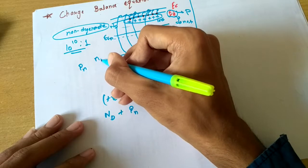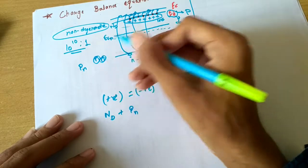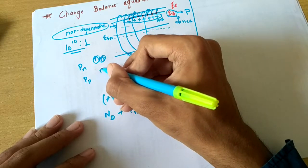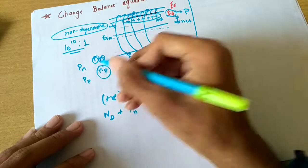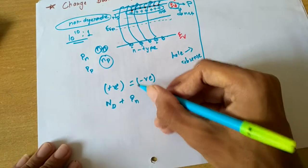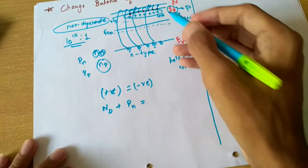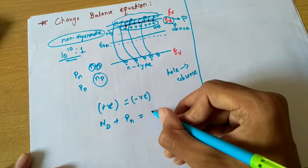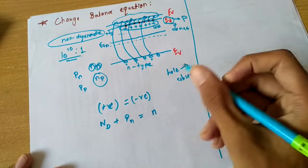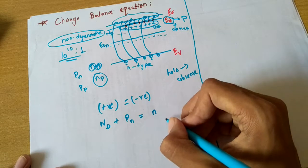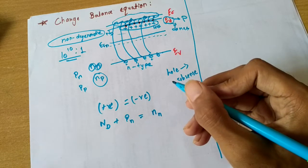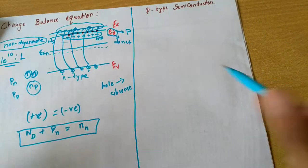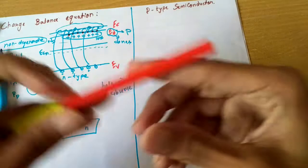This notation denotes the number of electrons in an n-type semiconductor. Similarly, this is the number of holes in a p-type semiconductor, and this is the number of electrons in a p-type semiconductor. This will be our notation throughout our course. The negative charge is the number of free electrons in the conduction band — that is, the number of free electrons in the n-type semiconductor. This gives us our charge balance equation. Now let's move towards p-type semiconductor.